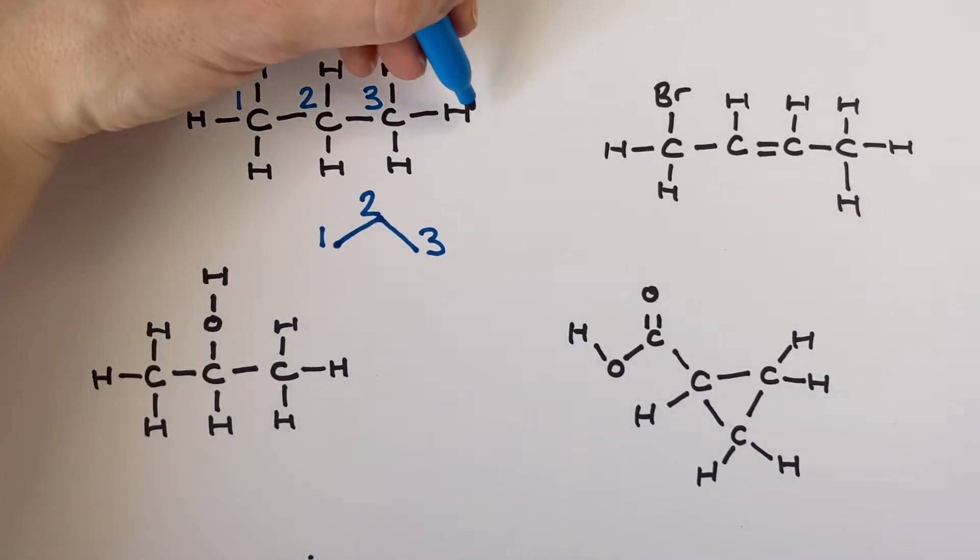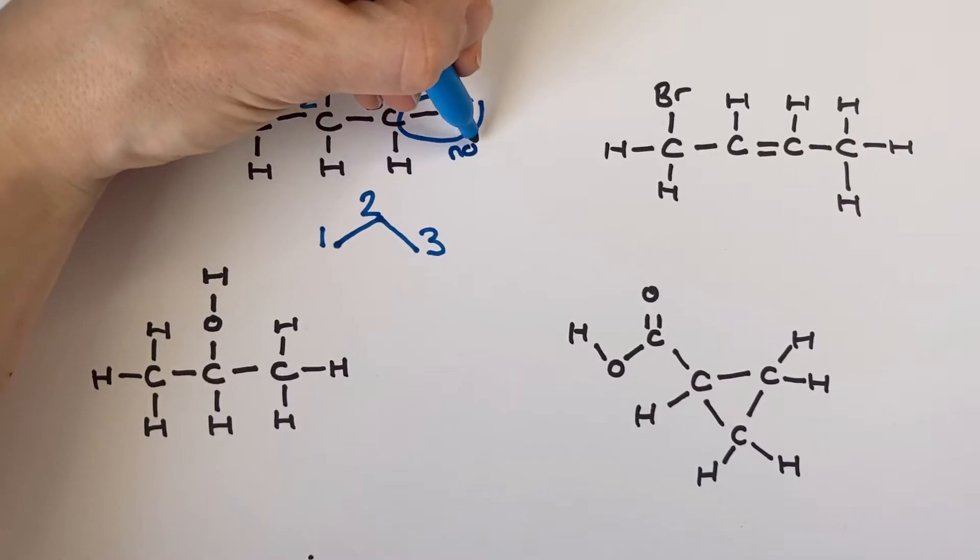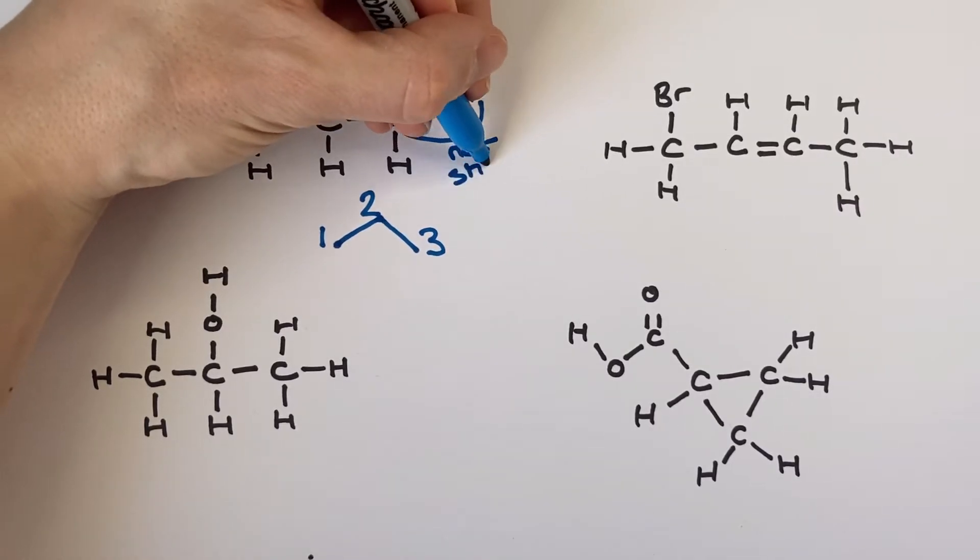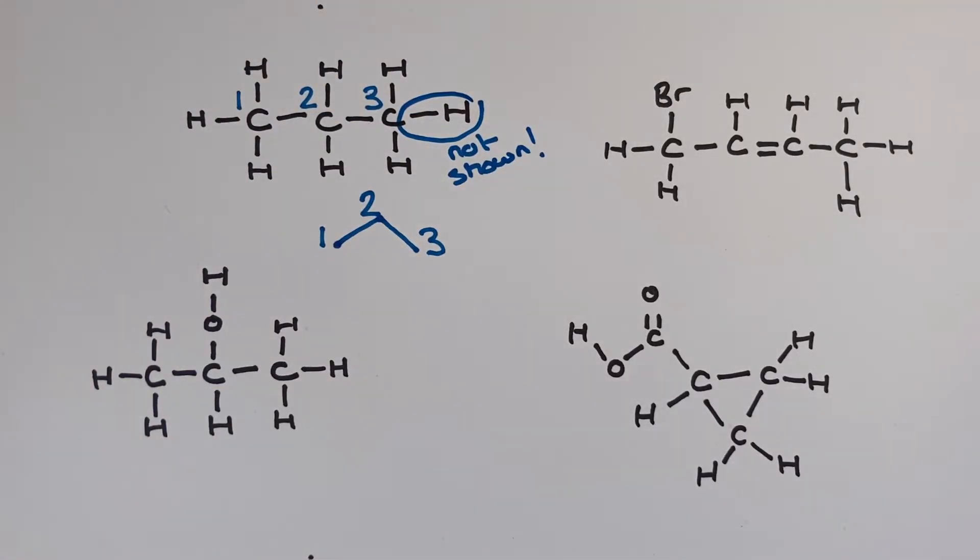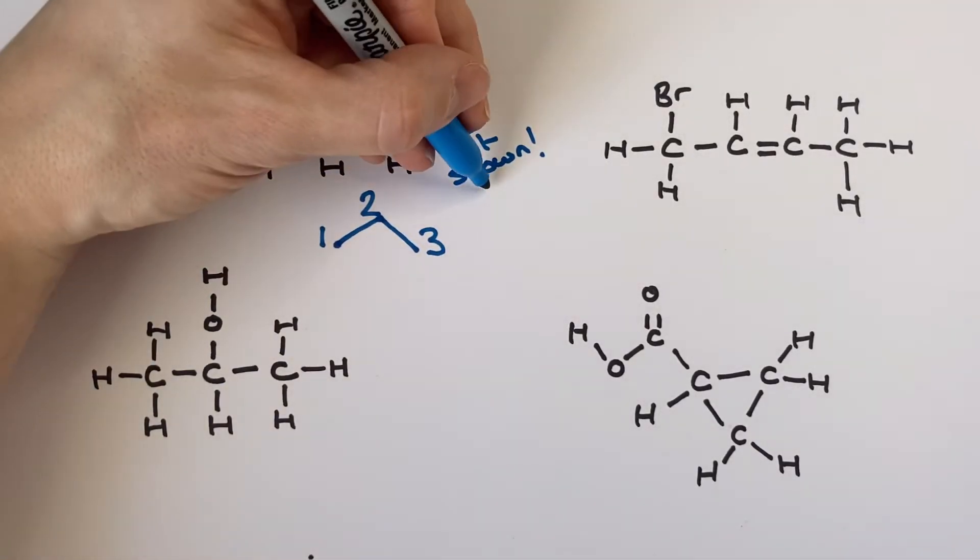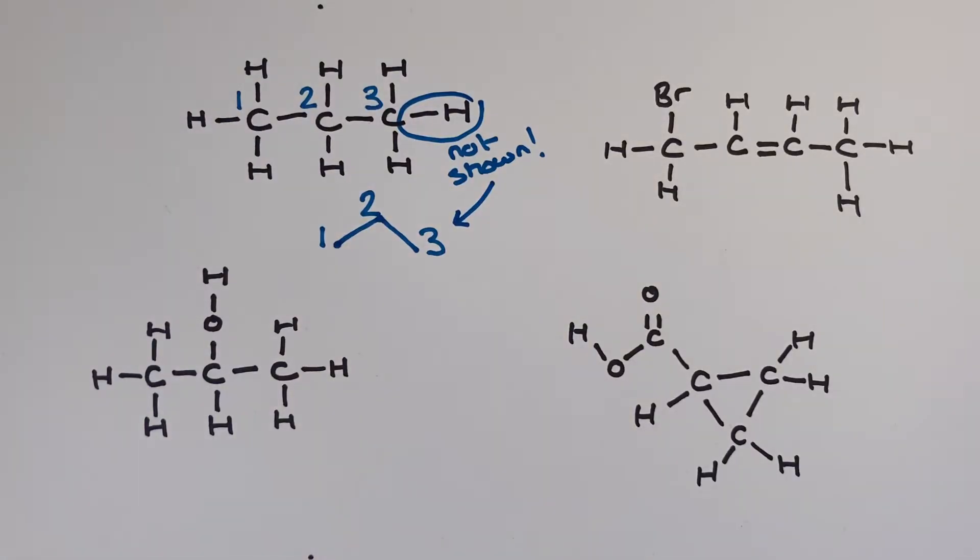We don't show any CH bonds but that doesn't mean we don't show any hydrogens ever. We are going to show hydrogen connected to other atoms like oxygen or nitrogen and the only time when the end of a line isn't a carbon atom is when we can clearly see a different atom at the end of one of the lines like we'll see in the propane 2-ol example in a moment.